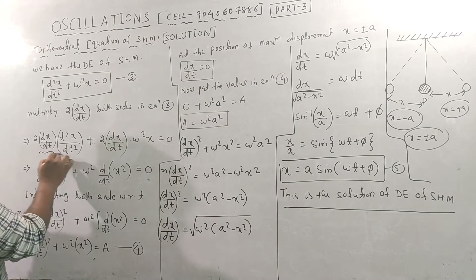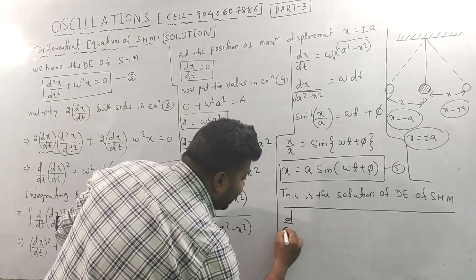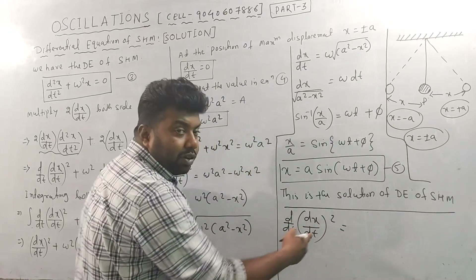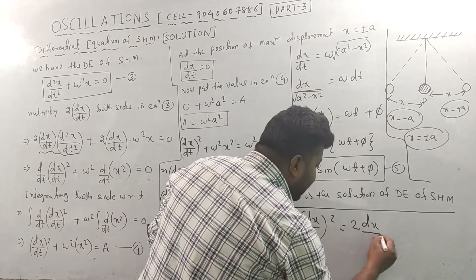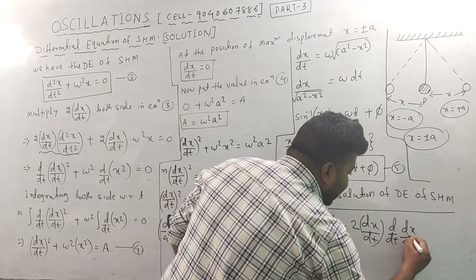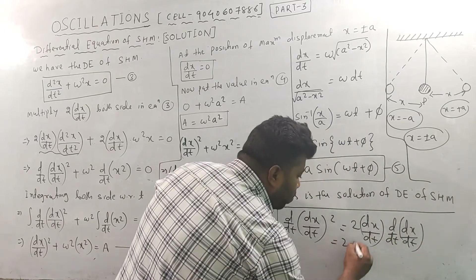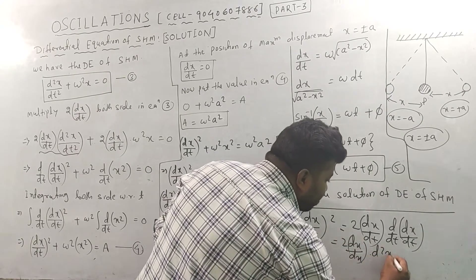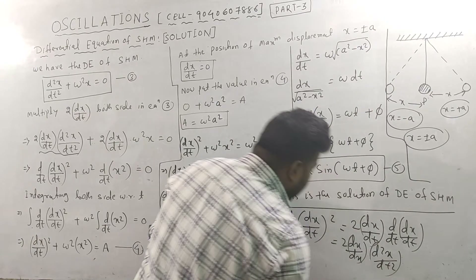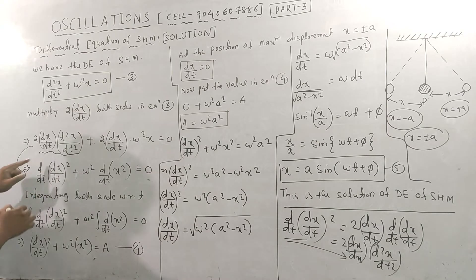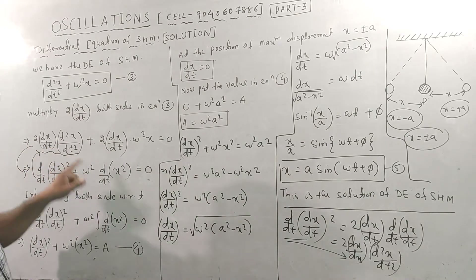If you want to make the total derivative, what is d/dt of (dx/dt)²? Using the chain rule formula, we get 2(dx/dt) · d/dt(dx/dt) = 2(dx/dt) · d²x/dt². So we can recognize that 2(dx/dt) · d²x/dt² is the derivative form of (dx/dt)².